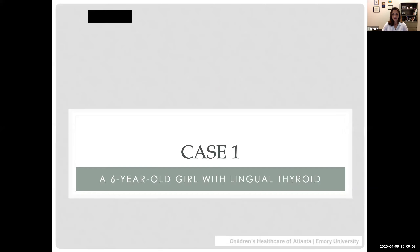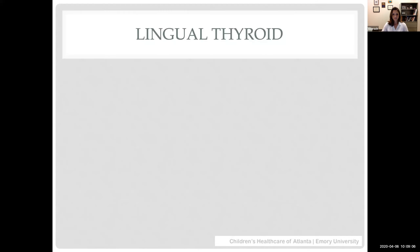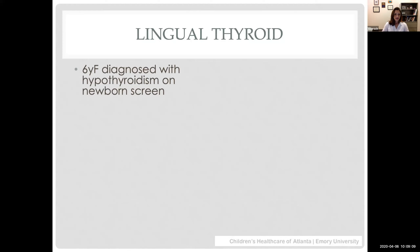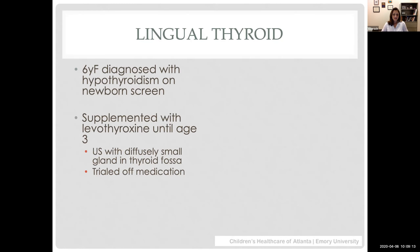The first case is a six-year-old girl with lingual thyroid. She was diagnosed with hypothyroidism on her newborn screen and supplemented with levothyroxine until about age three, then trialed off medication. That's a common course in children with congenital hypothyroidism — they're typically supplemented through their toddler years and then trialed off to see if their gland will function adequately on its own. She had an ultrasound at birth showing a small but present thyroid gland in the fossa.